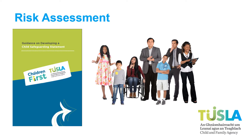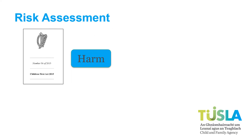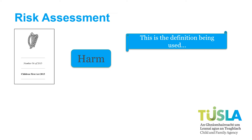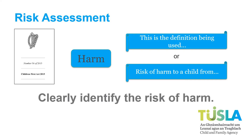Different people will have different ideas of what a risk is. Your risk assessment must clearly show that it relates to the risk of harm to a child as defined in the Children First Act 2015. You might state at the beginning of your risk assessment that this is the definition being used, or you might choose to list each risk as a risk of harm as defined in the Children First Act. However you decide to write your risk assessment, the risks listed should clearly identify what the risk of harm is.